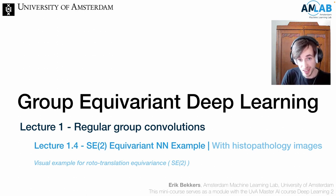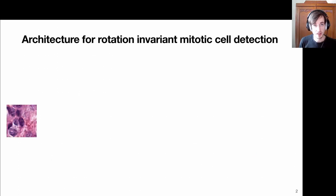Now that we've introduced regular group convolutions, we can build actual neural networks with them. We're going to do so in this video with the application to histopathology. We want to build an architecture for rotation invariant mitotic cell detection, to detect some type of abnormal cells.